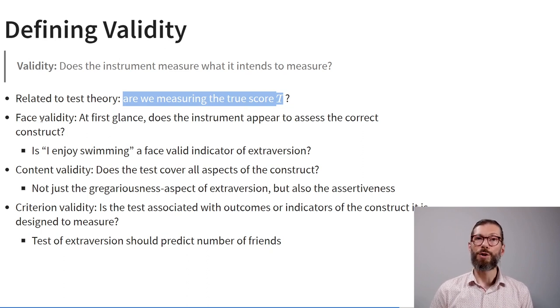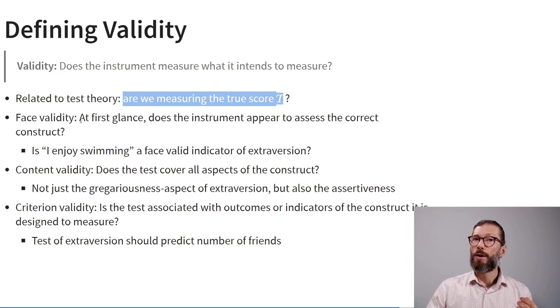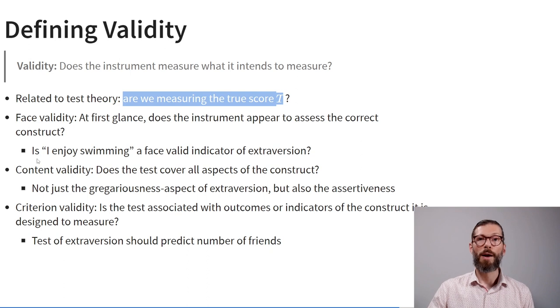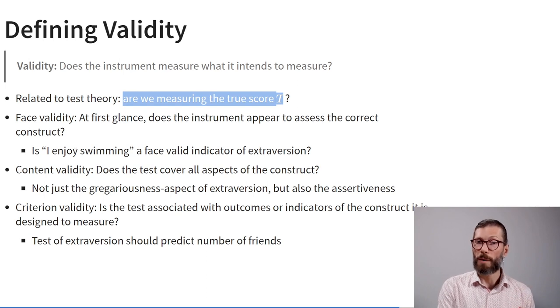There are different definitions of validity. One form is face validity: at first glance, just reading the items, does this questionnaire appear to assess the correct construct? For example, if I want to measure extraversion and one question is 'I enjoy swimming,' does that item have face validity — does it seem to relate to extraversion? Probably not.